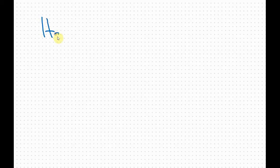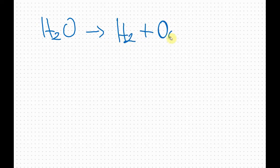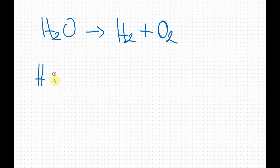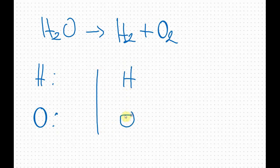Here is the first equation that I will balance. We have hydrogen and oxygen. We want to keep track of how many atoms of each element we have on both sides of the equation. So I'll make a little chart here with hydrogen and oxygen on each side.